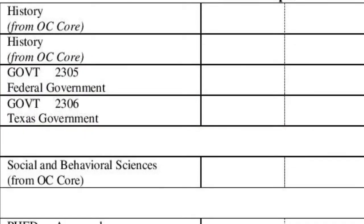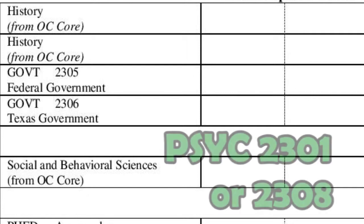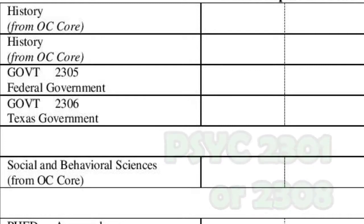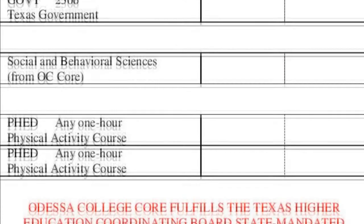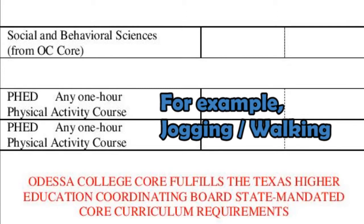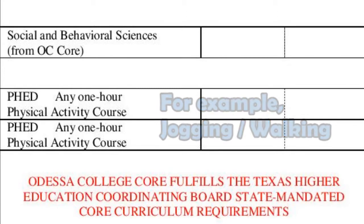Under the Social and Behavioral Sciences, you can choose to take either General Psychology 2301 or Child Psychology 2308. There are also two credits of P.E. required, and these P.E. credits must consist of an activity course like jogging and walking.